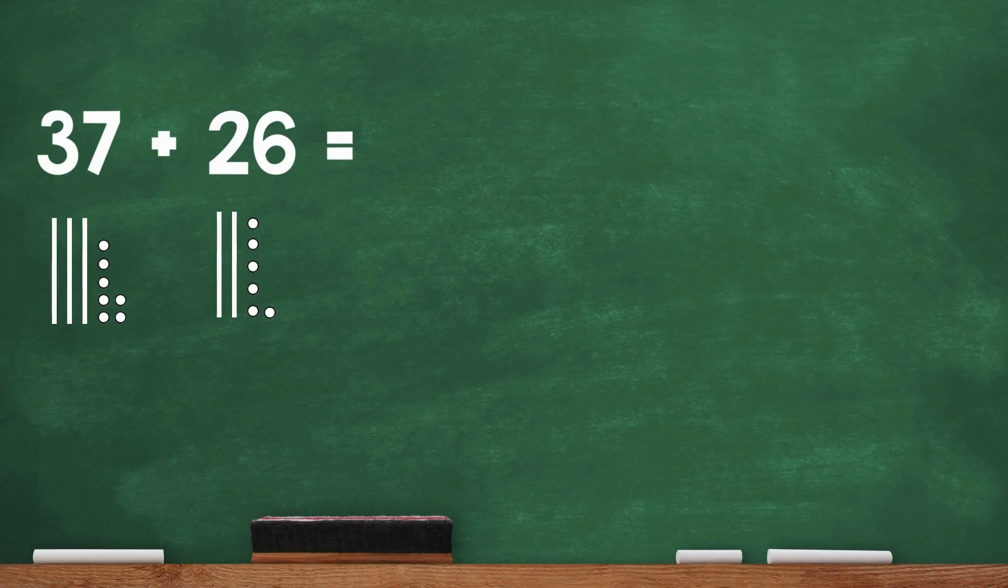When we have more than 10 ones, we can regroup. Let's cross out 10 ones and trade them for a 10. Here, I've crossed out 10 ones. I'll replace them with a 10.